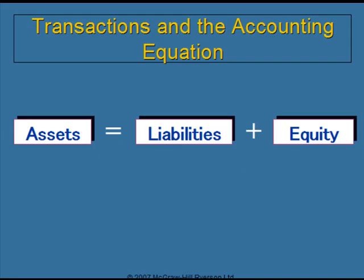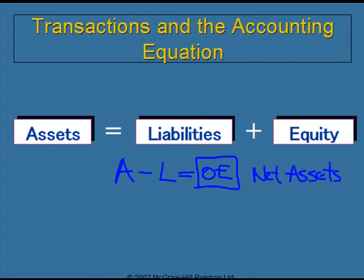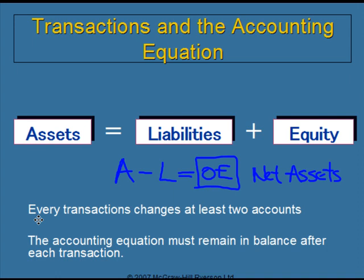The formula assets equal liabilities plus owner's equity is known as the accounting equation or the balance sheet equation. This equation is the foundation of accounting because it has to stay in balance at all times. It can be rewritten so that assets minus liabilities equals owner's equity — the result, owner's equity, is often called net assets. When recording or analyzing transactions, we need to follow two rules: every transaction has to change at least two accounts, and the accounting equation must remain in balance after each transaction is recorded.